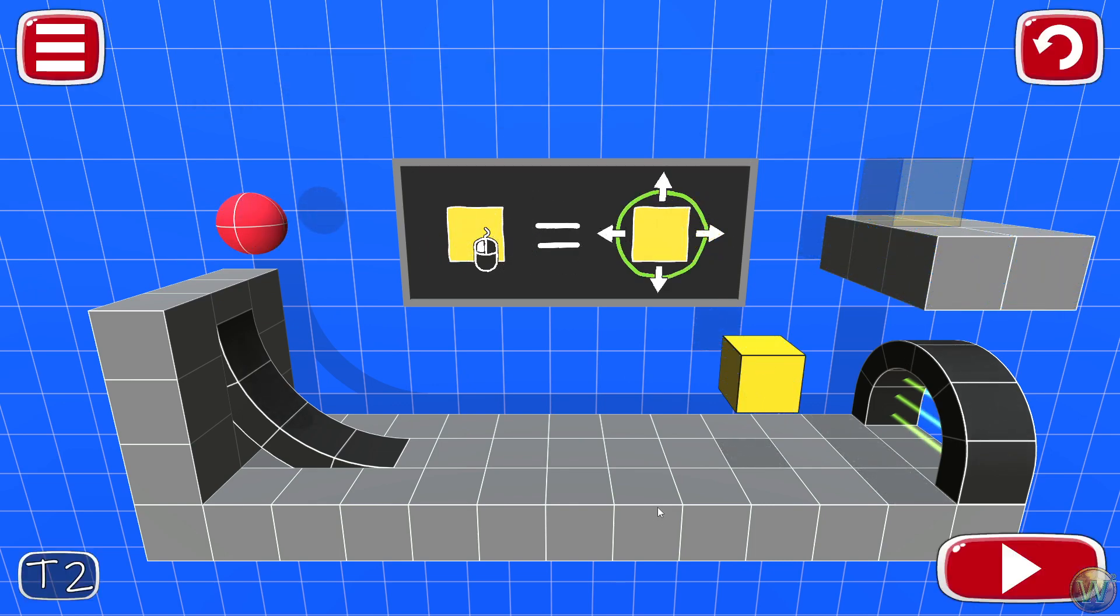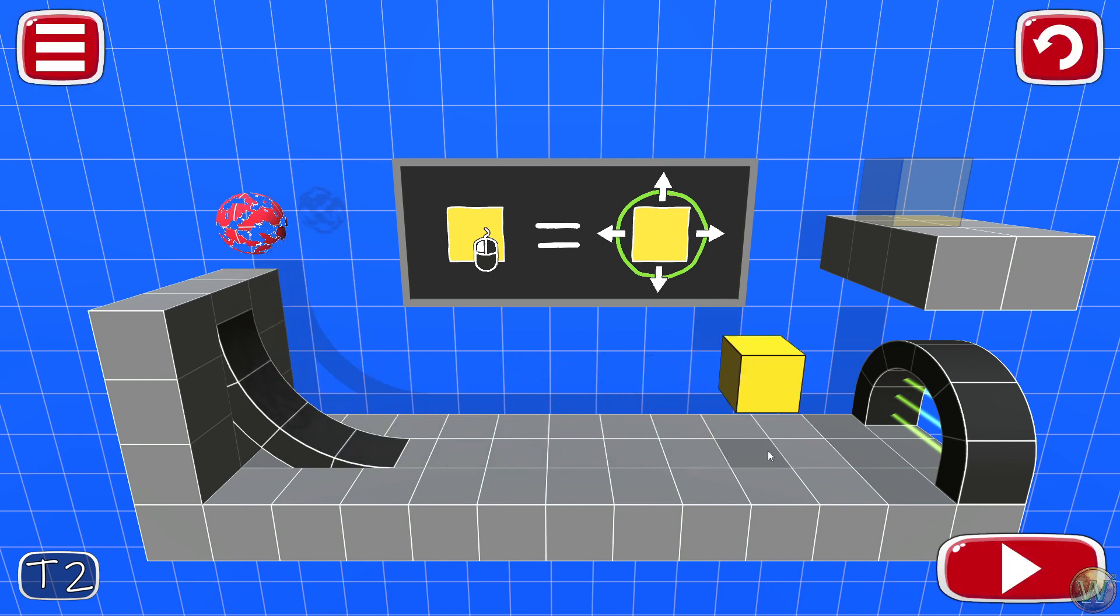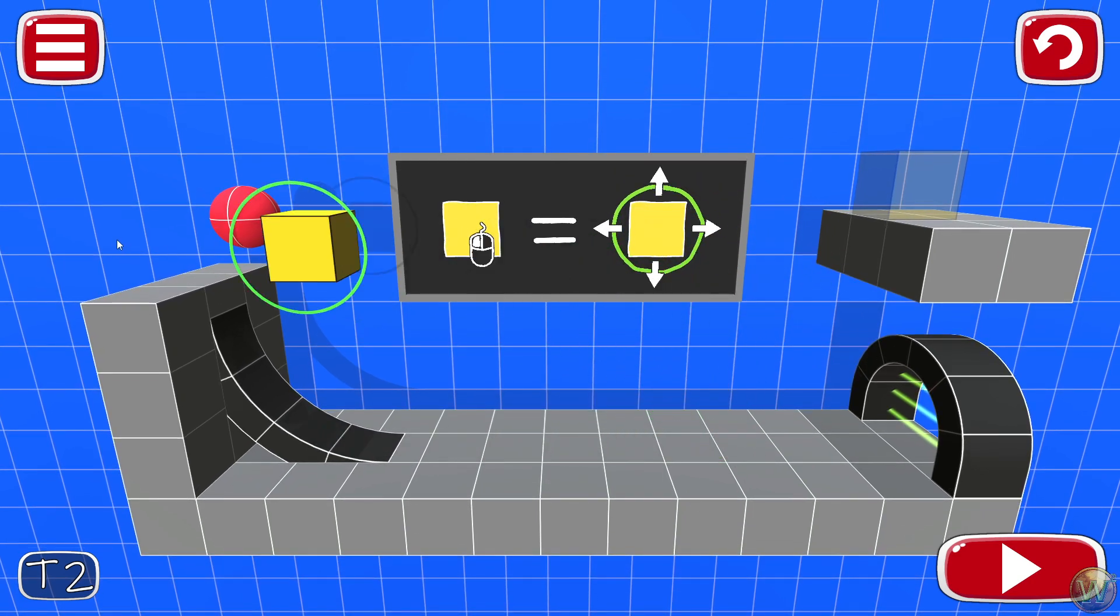There are things you can and have to do to control how the ball moves. For example, if we just run this one, the yellow cube drops in the way of the ball and then it can't make it to the exit.